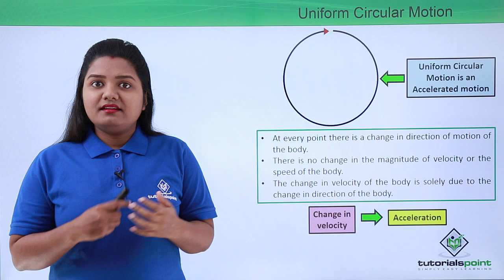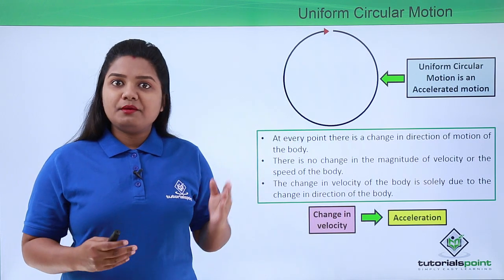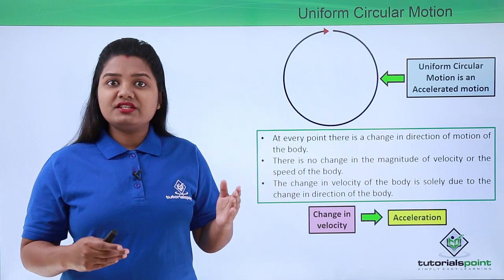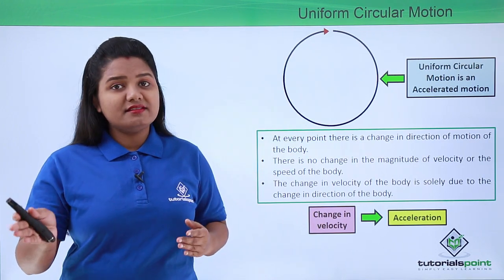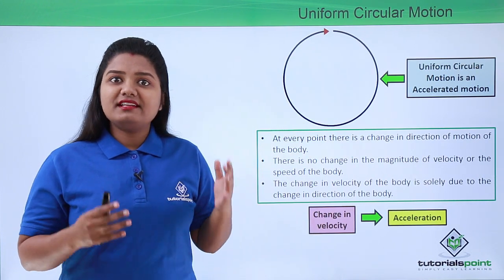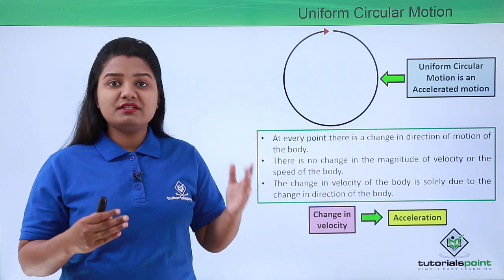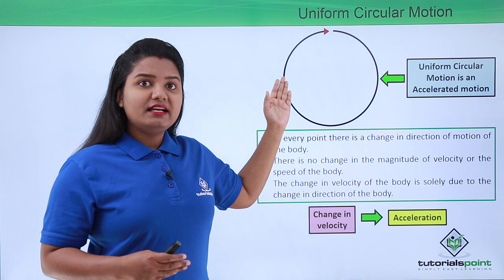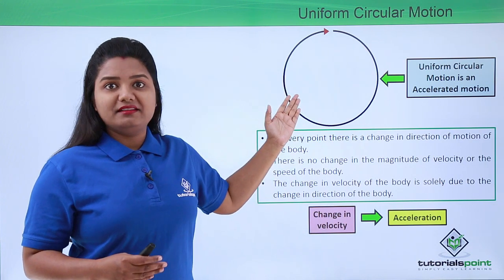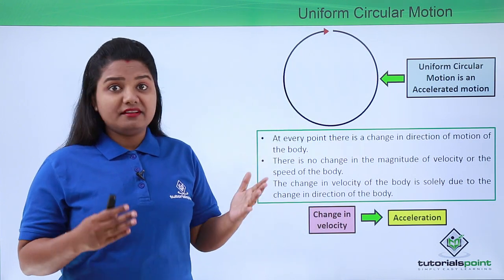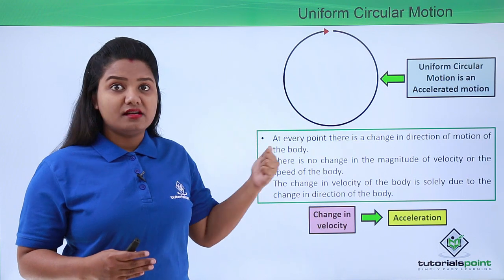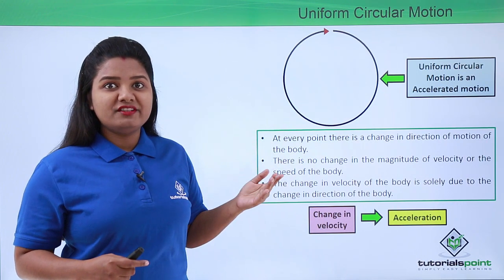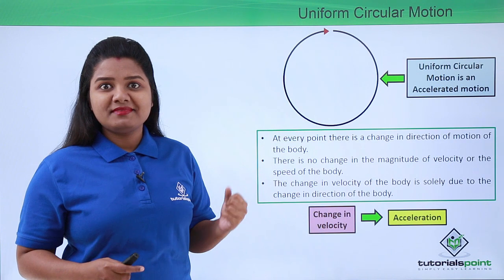When a body travels in a straight path, its acceleration is directed either along or opposite to its direction of motion. But here the path is circular, not linear. So what will be the direction of acceleration in this circular path — along the direction of motion or opposite to it? Let's see.